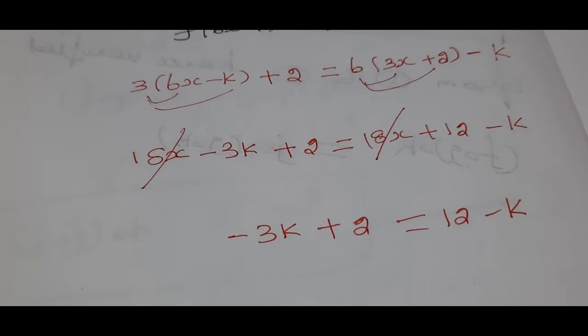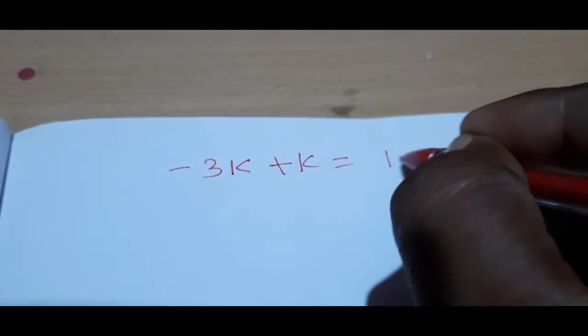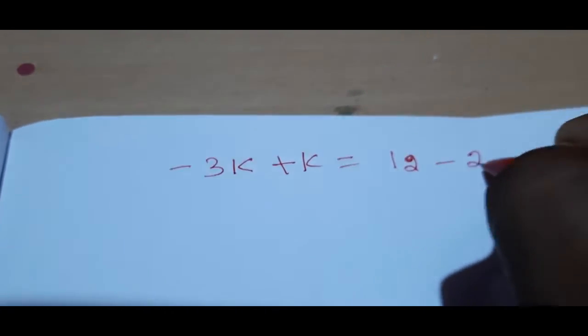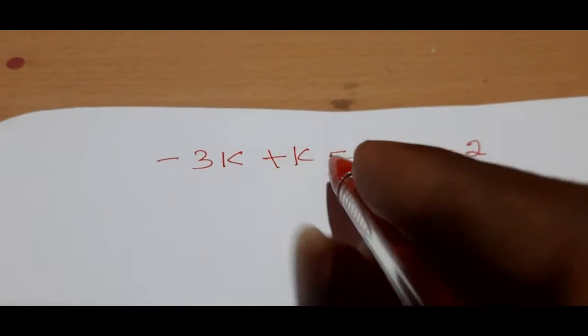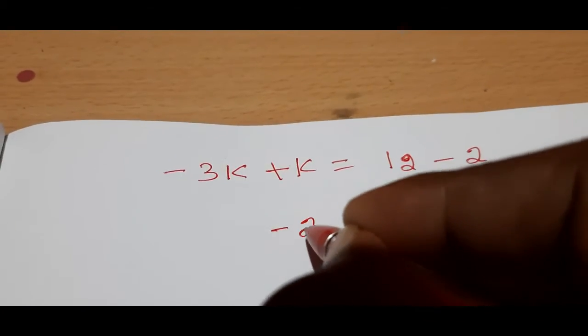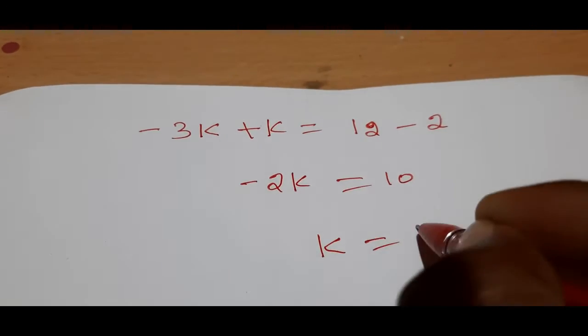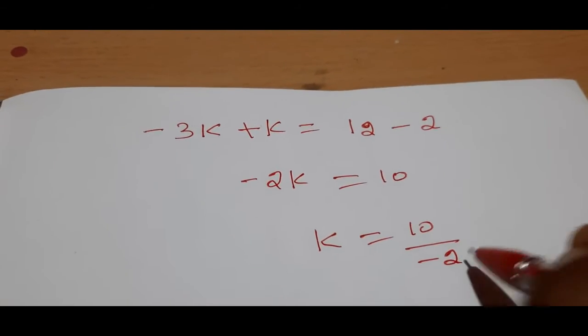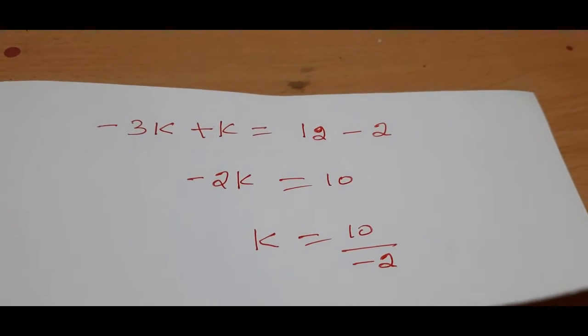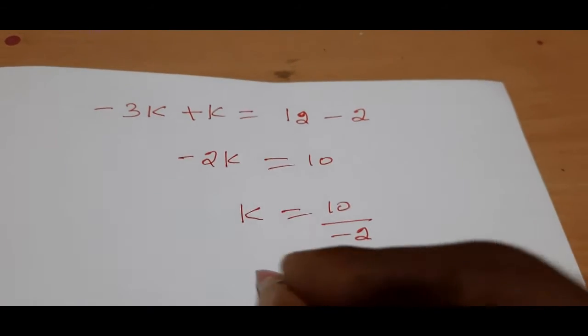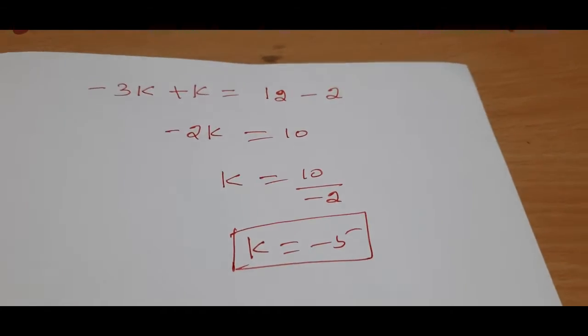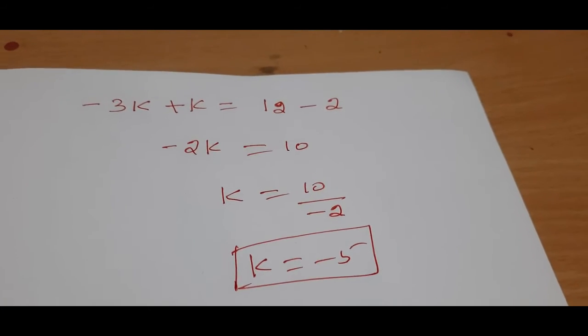We move minus 3k. Minus k plus 2k equals 12 minus 2. Minus 3k plus k is equal to minus 2k. Multiplication changes to division. Then k equals minus 2k divided by negative 2, so k equals 5.